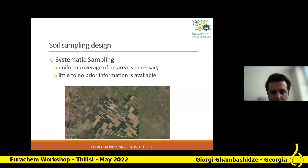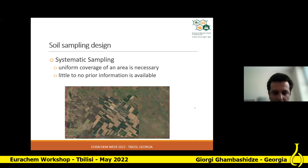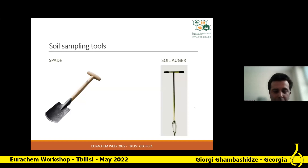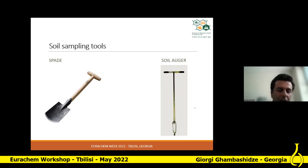Another issue related to sampling is what type of tools we use during sampling. From a practical point of view, this is important in the field in terms of the time spent to take samples and also the type of soils being sampled — it can be stony, have very high clay content, be more dry or more wet. The main tools include a normal spade, which can have different shapes, and different types of soil augers or soil core samplers.